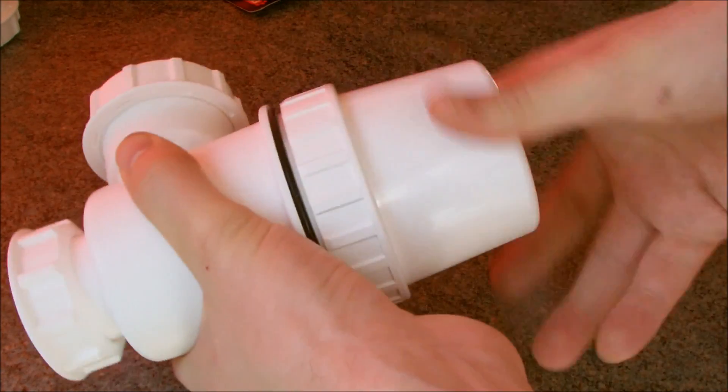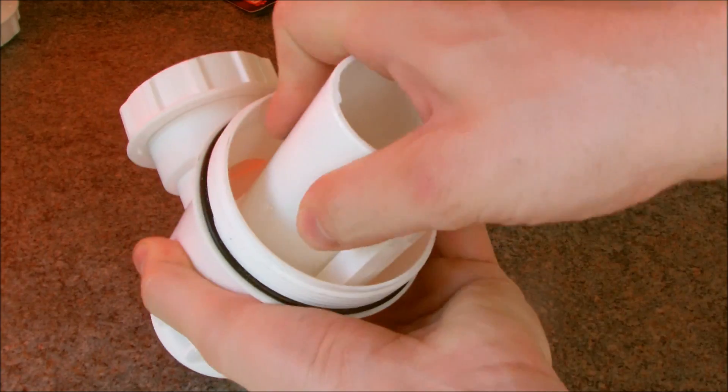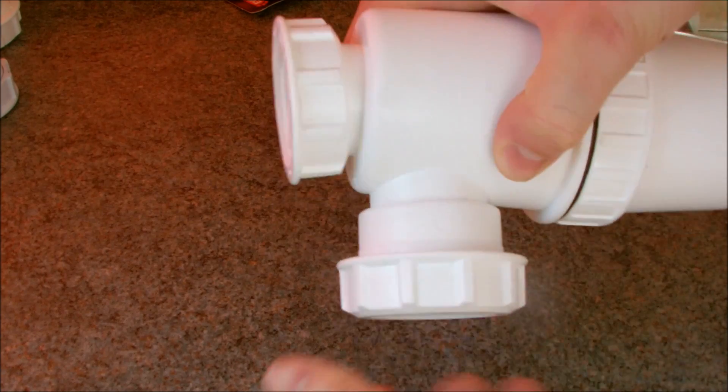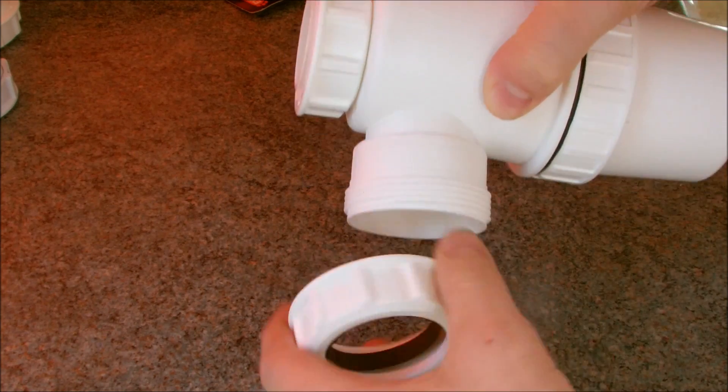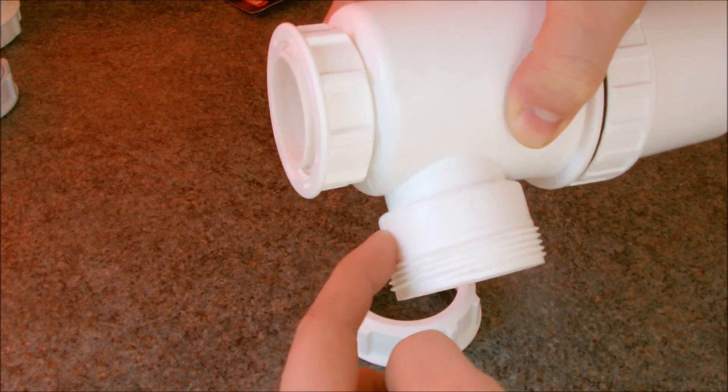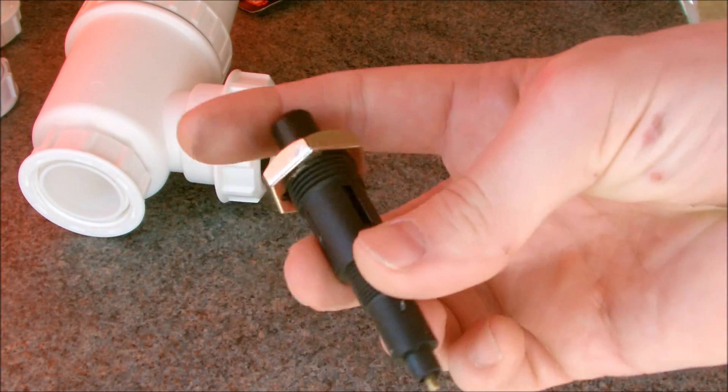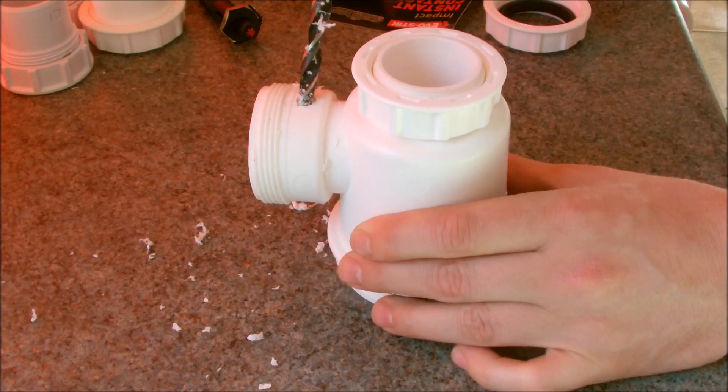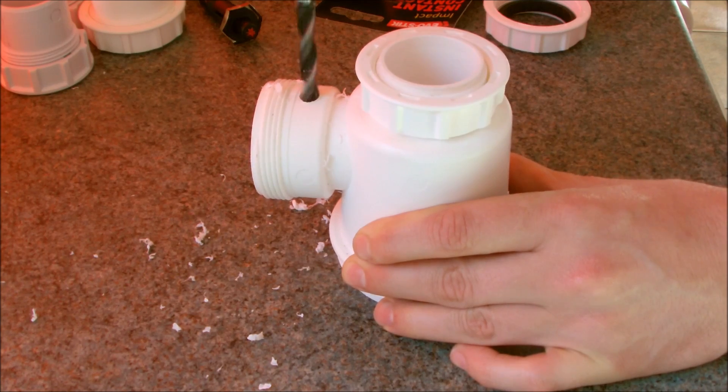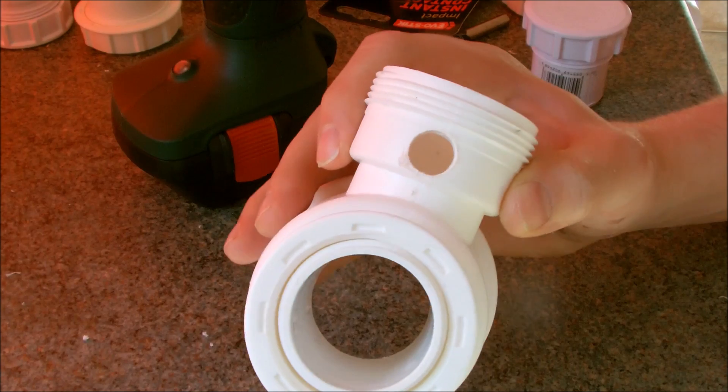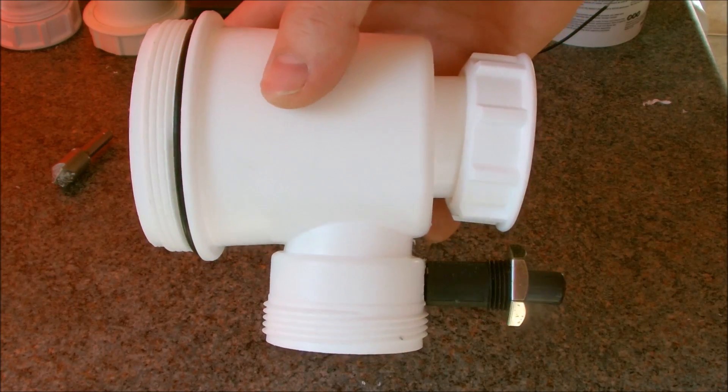So the first thing I did was unscrew the bottle trap and remove the plastic part from inside. Next I decided on a location for the ignition. For the ignition I'm going to use this barbecue igniter switch and insert it into the chamber. I drilled out a hole big enough for the igniter and glued it in place.